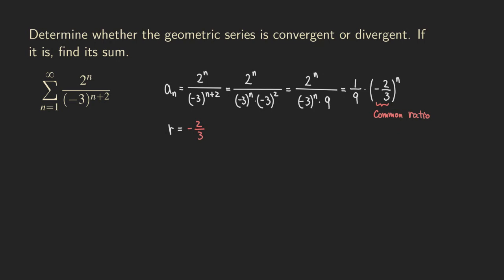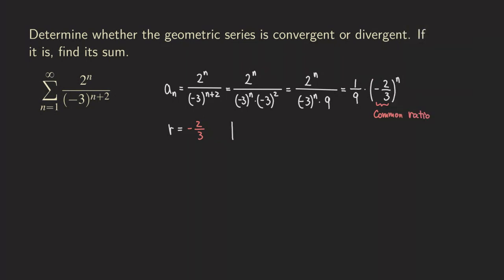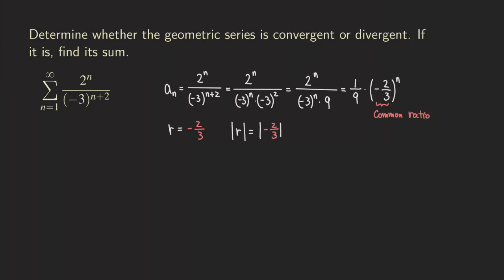We actually don't want to use R to determine whether the series is convergent. We actually want to use the absolute value of R to determine that. So now for the absolute value of R, which is the absolute value of negative 3 over 2. When you take the absolute value of negative 3 over 2, you get 3 over 2, and in that case that's less than 1. So that tells you that the series is convergent.